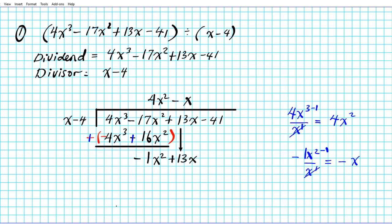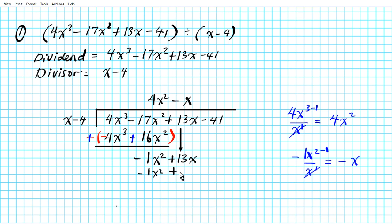We distribute negative x across the two terms of the divisor: negative x times x = negative 1x², and negative x times negative 4 = positive 4x. Now we subtract again — distributing the minus sign, this positive becomes negative and that negative becomes positive. Combining downwards: the x² terms cancel out. Positive 13x minus 4x is 9x. We bring down negative 41, giving us 9x minus 41.